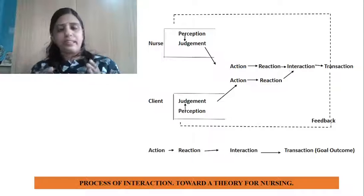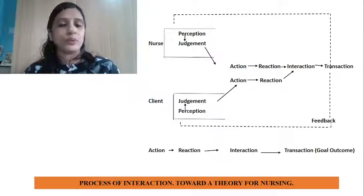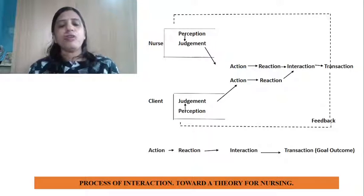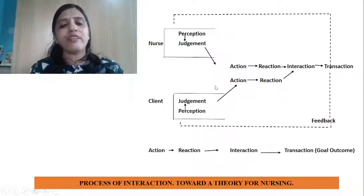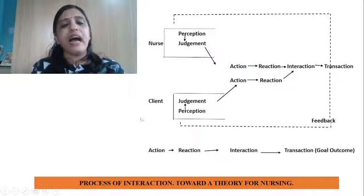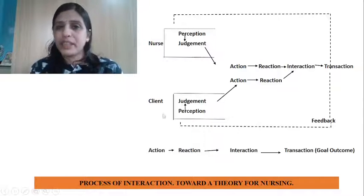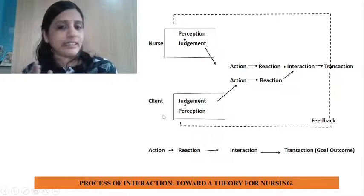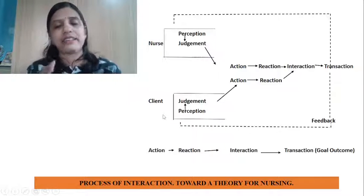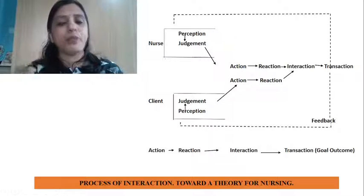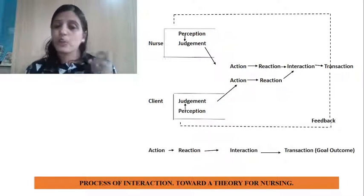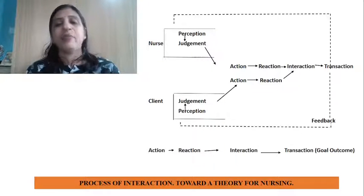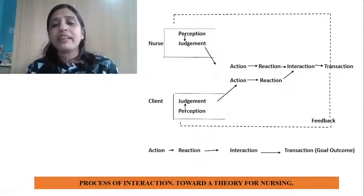This is the theoretical model Imogen M. King has given us, representing the process of interaction. Whenever we communicate with each other, all these things are happening within us according to King. In this model, we have two people — one is a nurse and another is a client.